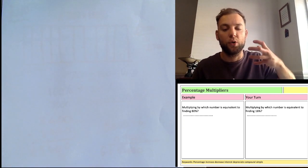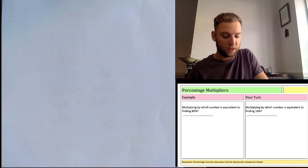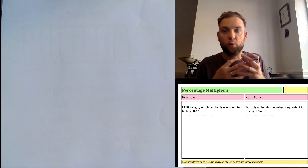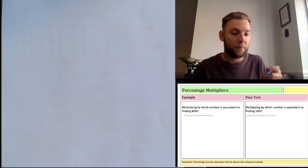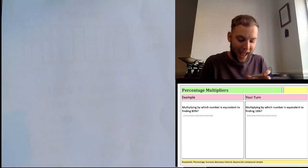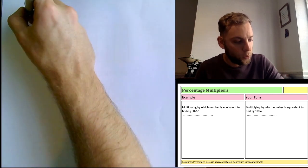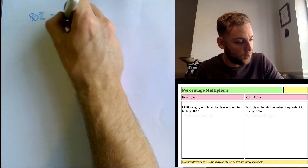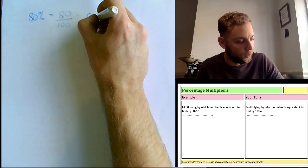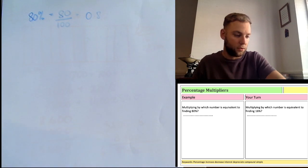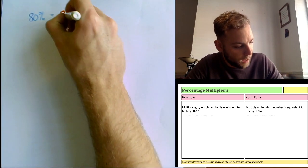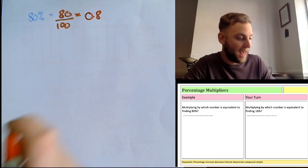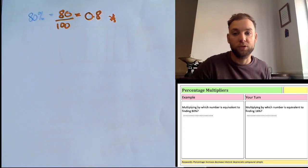It's called a multiplier. To find your multiplier, you write your percentage as a decimal. Remember, percent means out of a hundred, so if I want to write 80 percent as a decimal, that's 80 out of 100, which equals 0.8. That is what's called our multiplier.